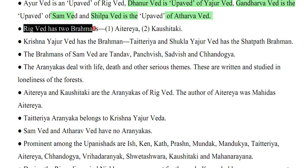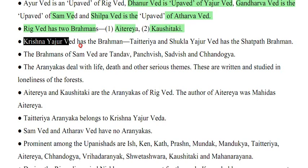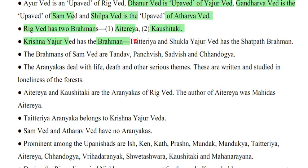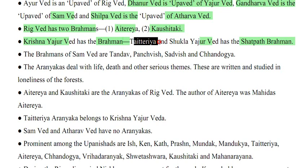Rigveda has two Brahmans: Atri and Kausitki. Krishna Yajurved has the Brahman Taittiriya, and Sukla Yajurved has the Satpath Brahman. The Brahmans of Samaved are Tanda, Panchavish, Sadavish and Chandogya.